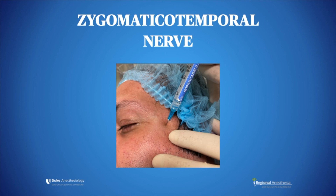Upon exiting the skin, proceed to walk the needle down the concave posterior wall of the lateral orbital rim, approximately to the level of the lateral canthus. At this point, the block can be accomplished by injecting anywhere from one to two ml of local anesthetic.